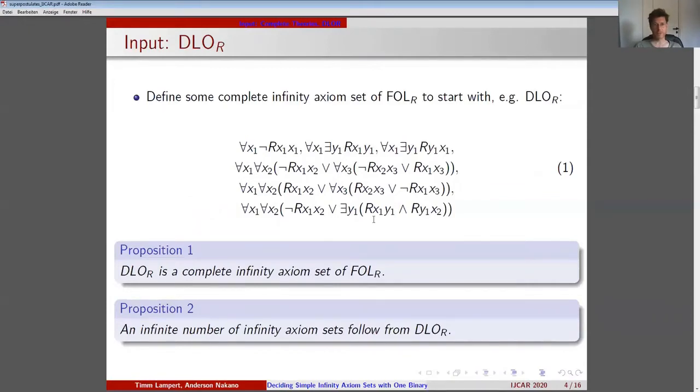We have the axiom of irreflexivity, the axioms for no endpoints, two axioms for transitivity, namely of R and of non-R, and the axiom of density. The axiom for transitivity of non-R replaces trichotomy of DLOO with identity.